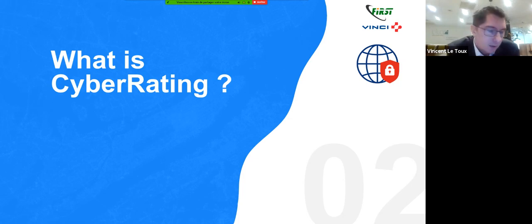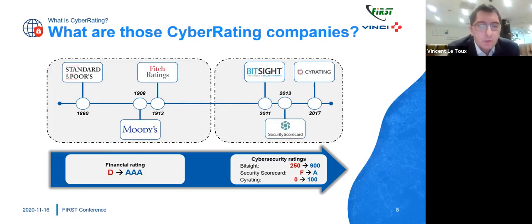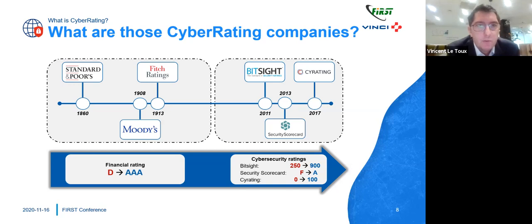So let's start. I'm here to talk about cyber rating. The first thing you should ask is: what is cyber rating? I think we should put cyber rating in continuity with traditional financial scoring. Everybody knows names like Fitch or Moody's, which were used during the financial crisis. Basically, these companies go in, collect information, and based on that they assign a financial rating — a score from D to AAA. It's the same for cybersecurity. We have seen many actors, for example BitSight, CyberRating, or SecurityScorecard. They are collecting mostly public information, and based on that they make a score.